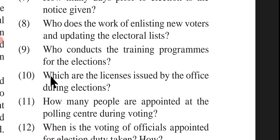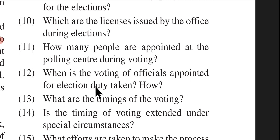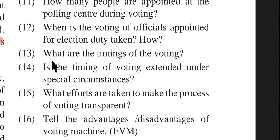Which are the licenses issued by the office during elections? How many people are appointed at the polling center during voting? When is the voting of officials appointed for election duty taken, and how? What are the timings of the voting? Is the timing of voting extended during special circumstances?